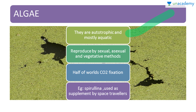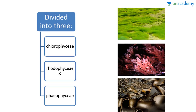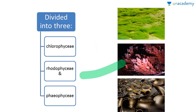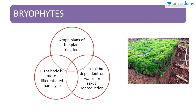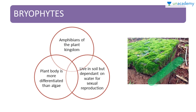An example is Spirulina, which is used as a food supplement by space travelers. Algae is divided into three groups: Chlorophyceae, the green algae; Rhodophyceae, the red algae; and Phaeophyceae, the brown algae.